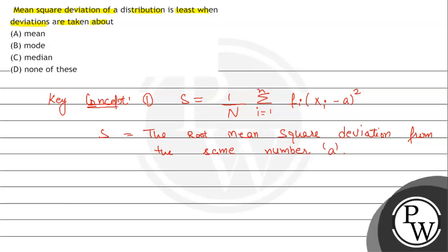So now the concept we will use: S is the root mean square deviation from the number a, and sigma is the standard deviation.